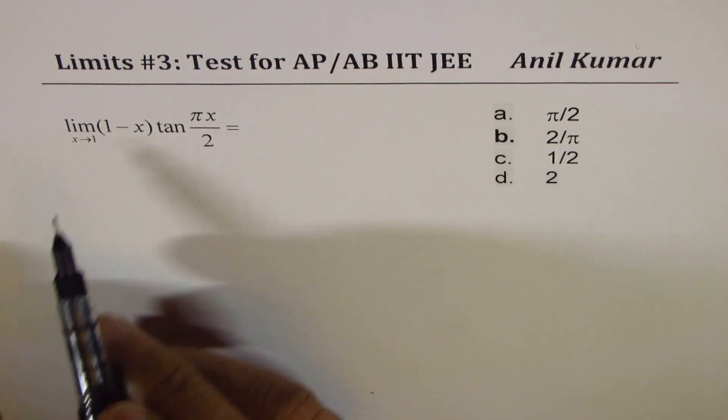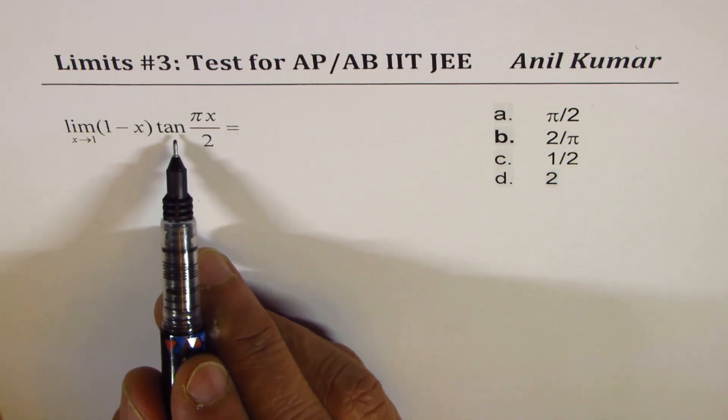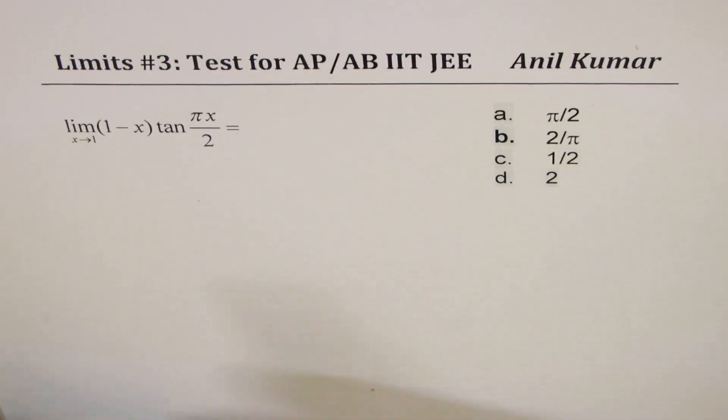The question here is limit x approaches 1, 1 minus x times tan pi x over 2. Four choices are given to you. You can always pause the video, answer the question, and then look into my suggestions.